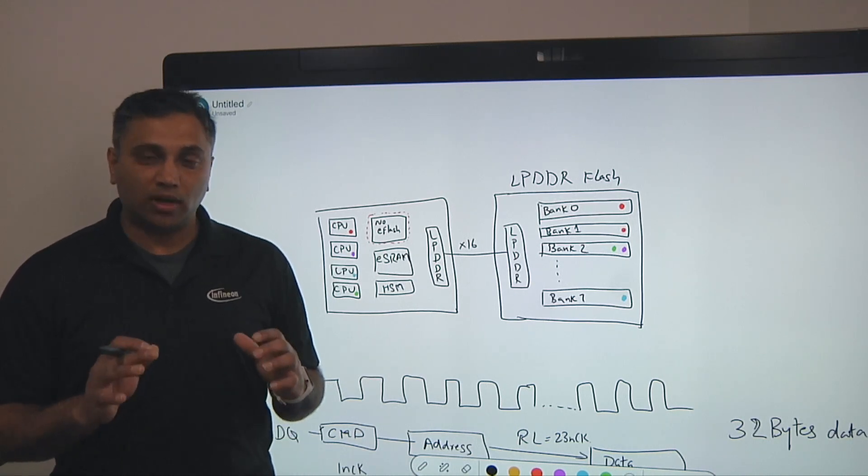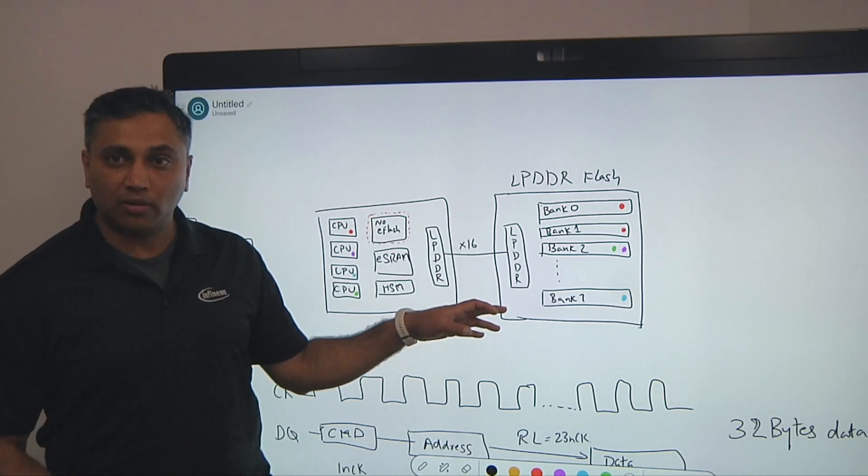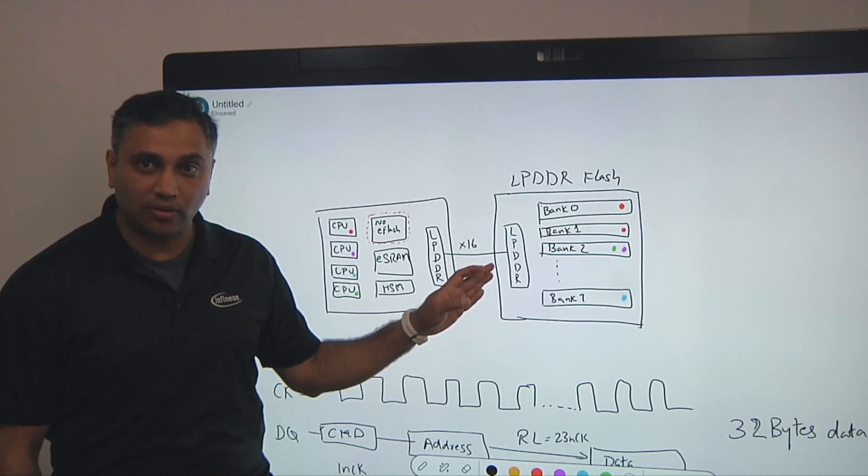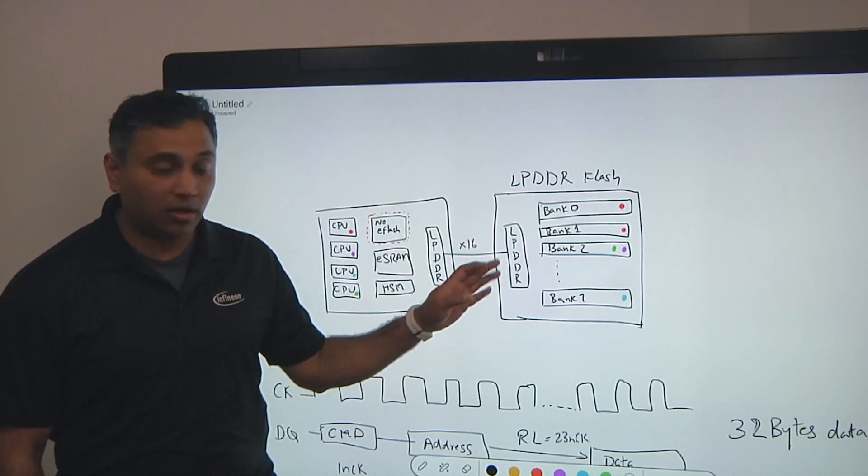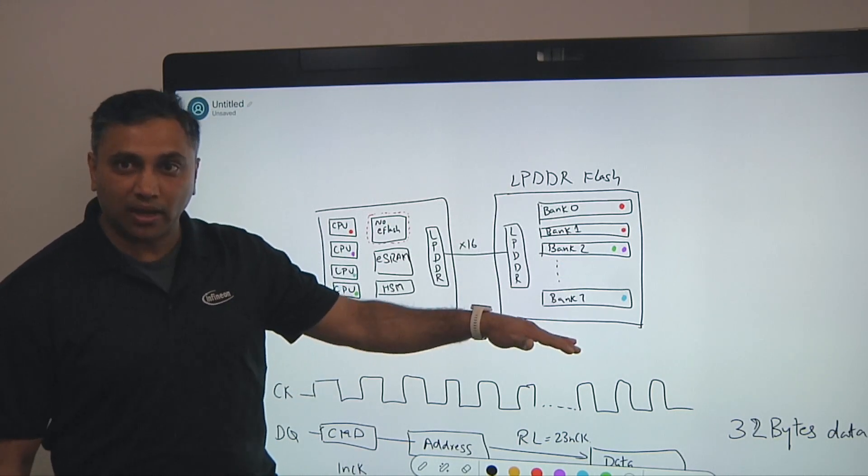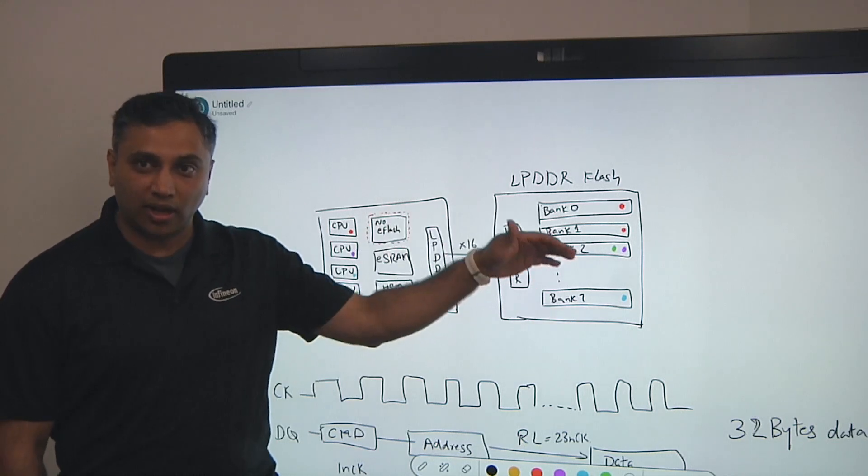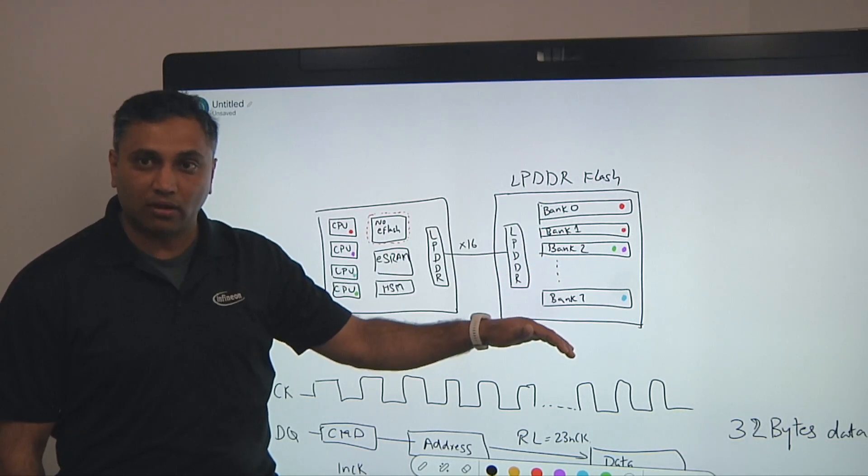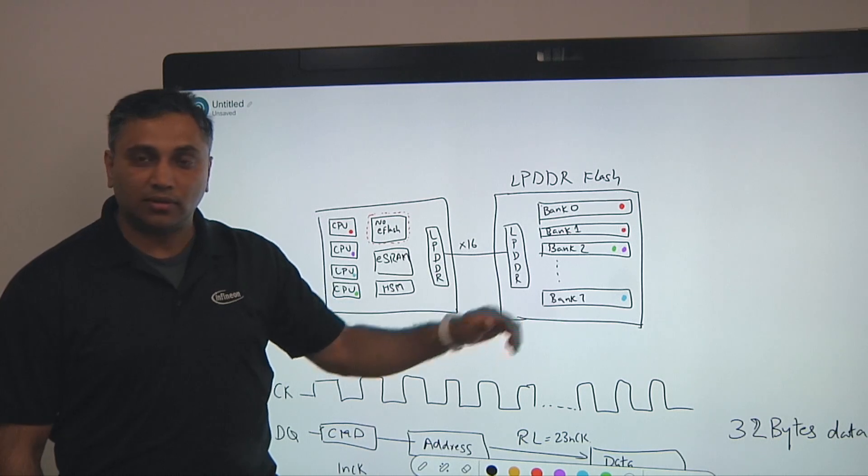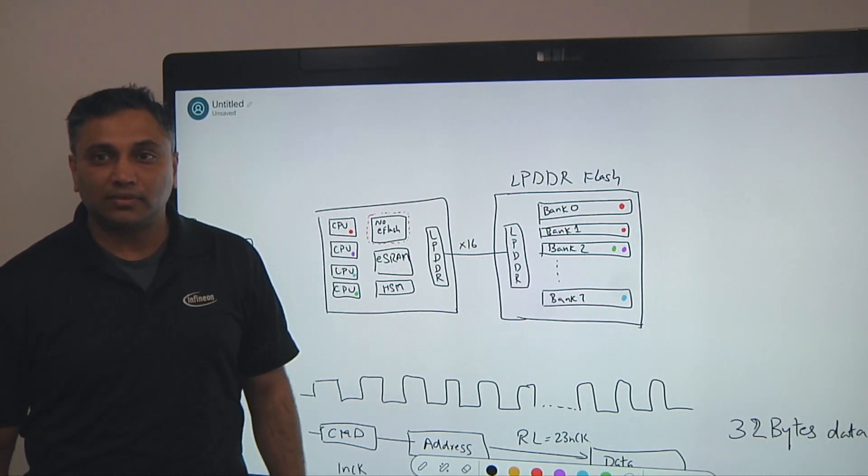There are two aspects to it. One, this is the first memory with an LPDDR interface, right, to a NOR flash memory. And you have multiple banks that the processor can access without having any bank conflicts. And just to be clear, this is NOR versus NAND, right?